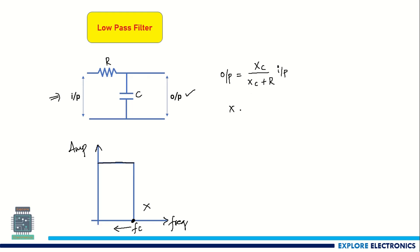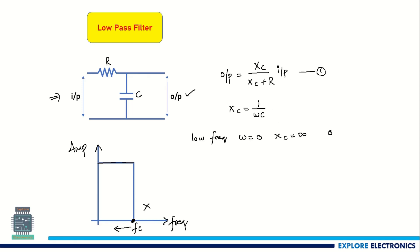Here, Xc equals 1 divided by ωC, where ω is 2πf, the angular frequency. Considering two extreme cases: if the input has a very low frequency, ω is approximately 0. In this case, Xc equals infinity, and from the output expression, if Xc is infinite, the output will be almost equal to the input.